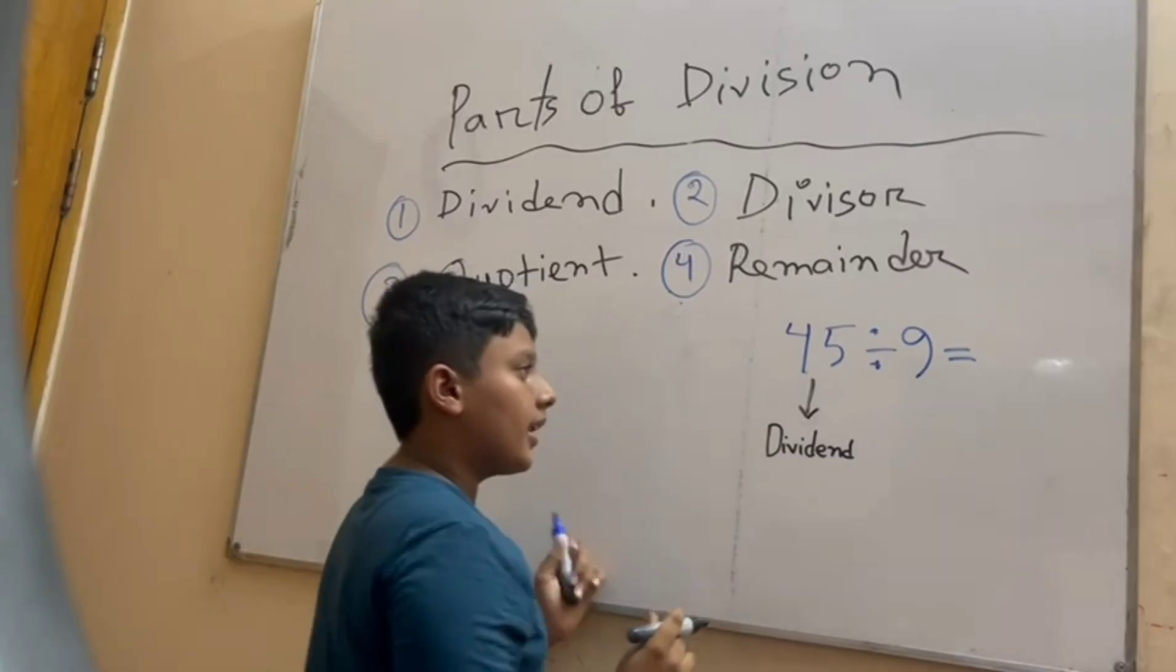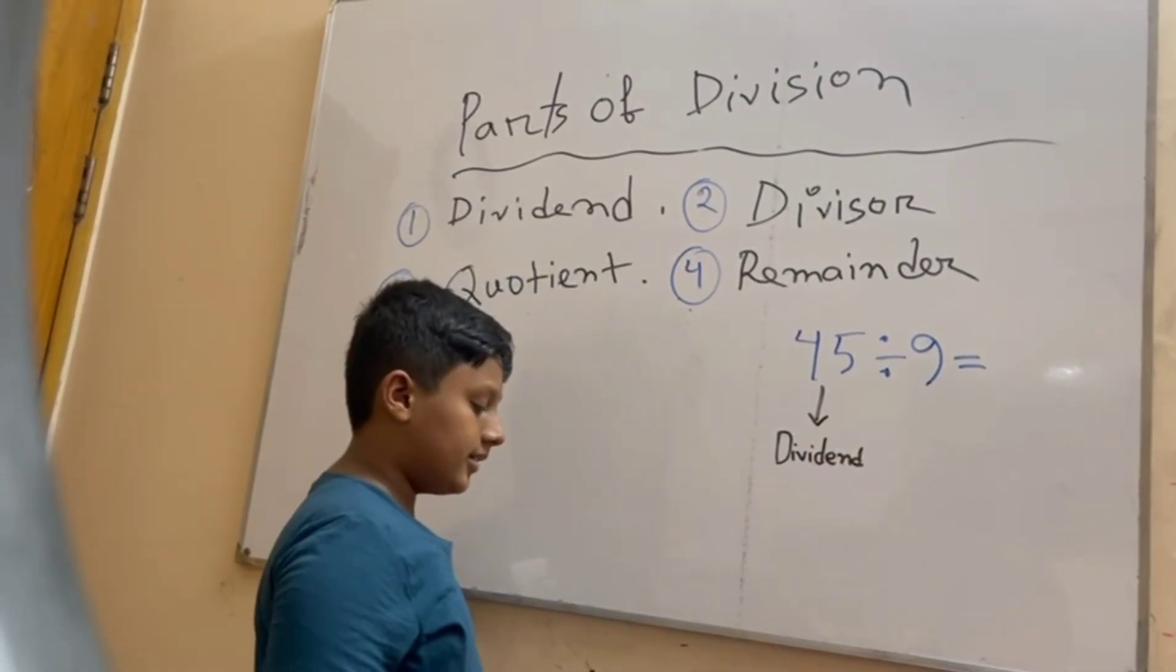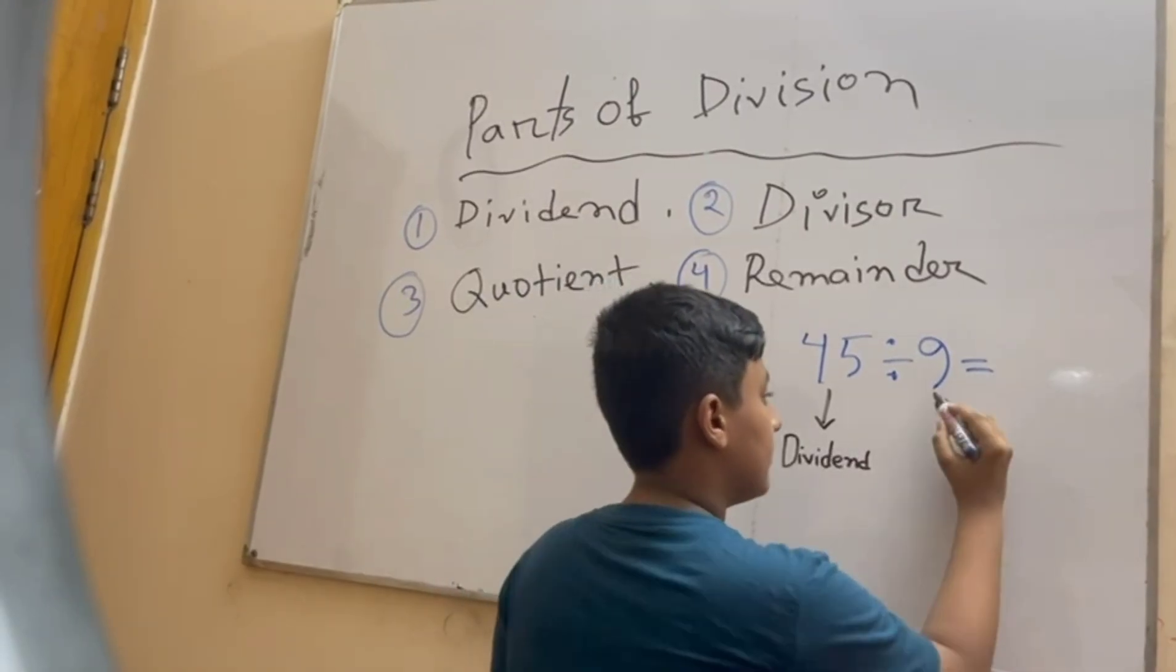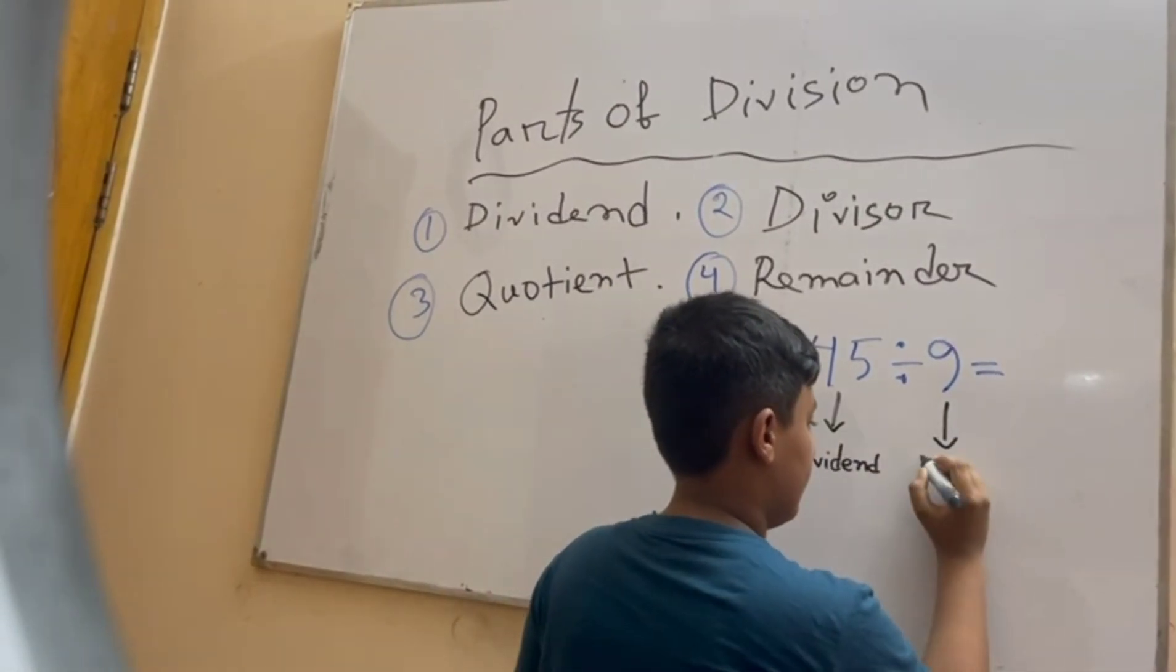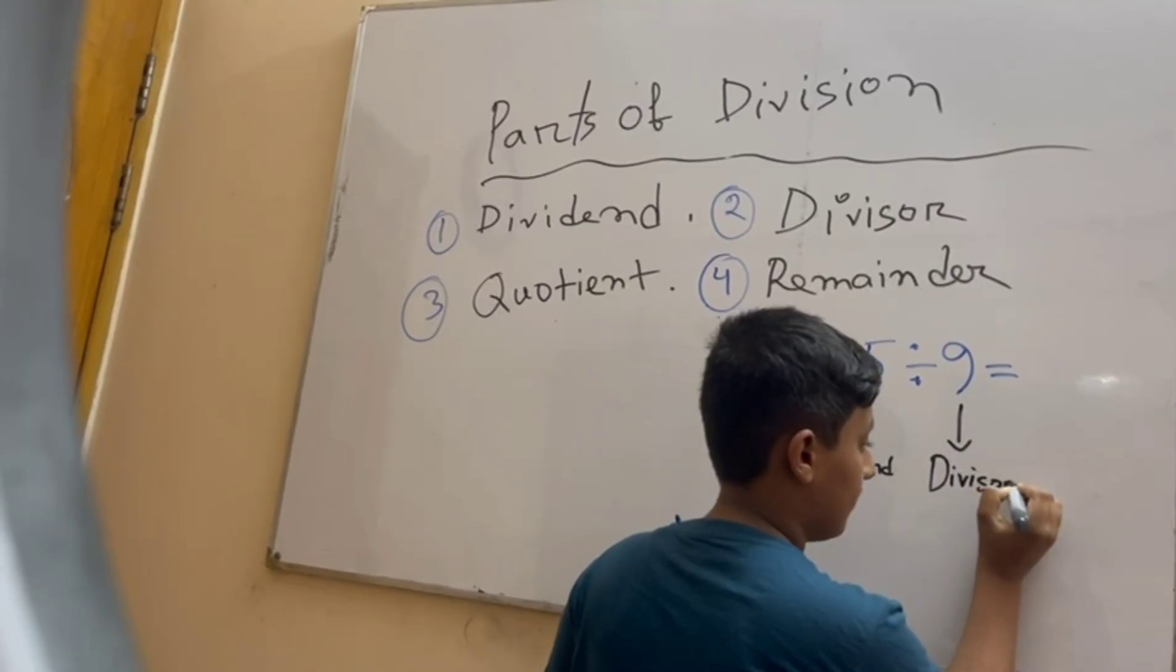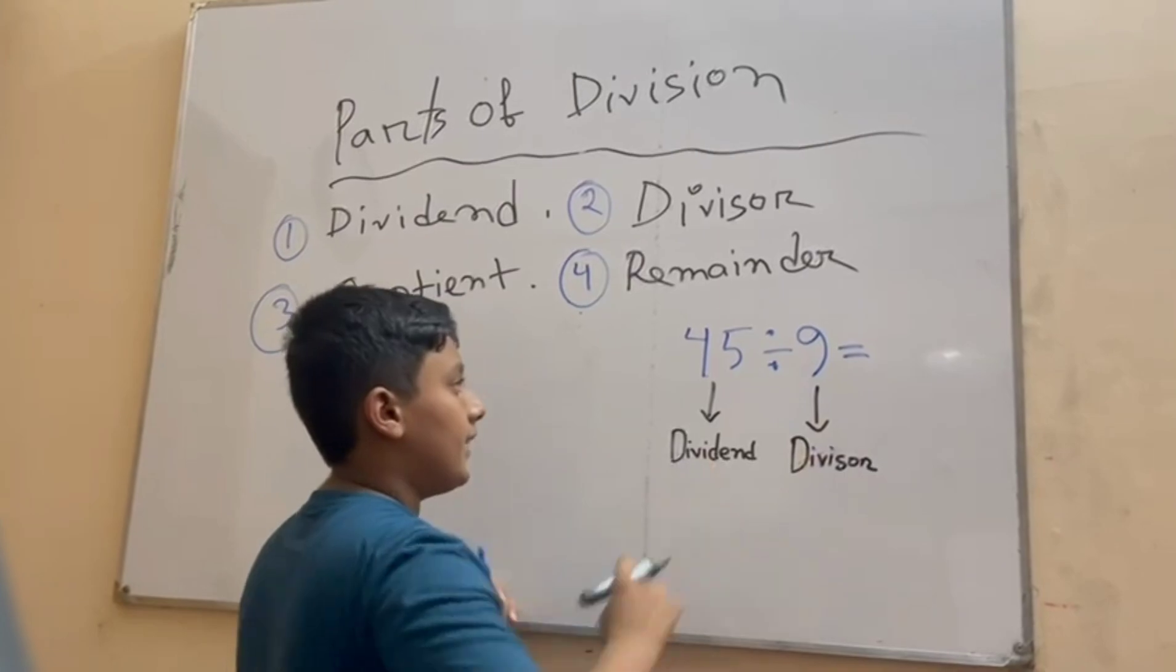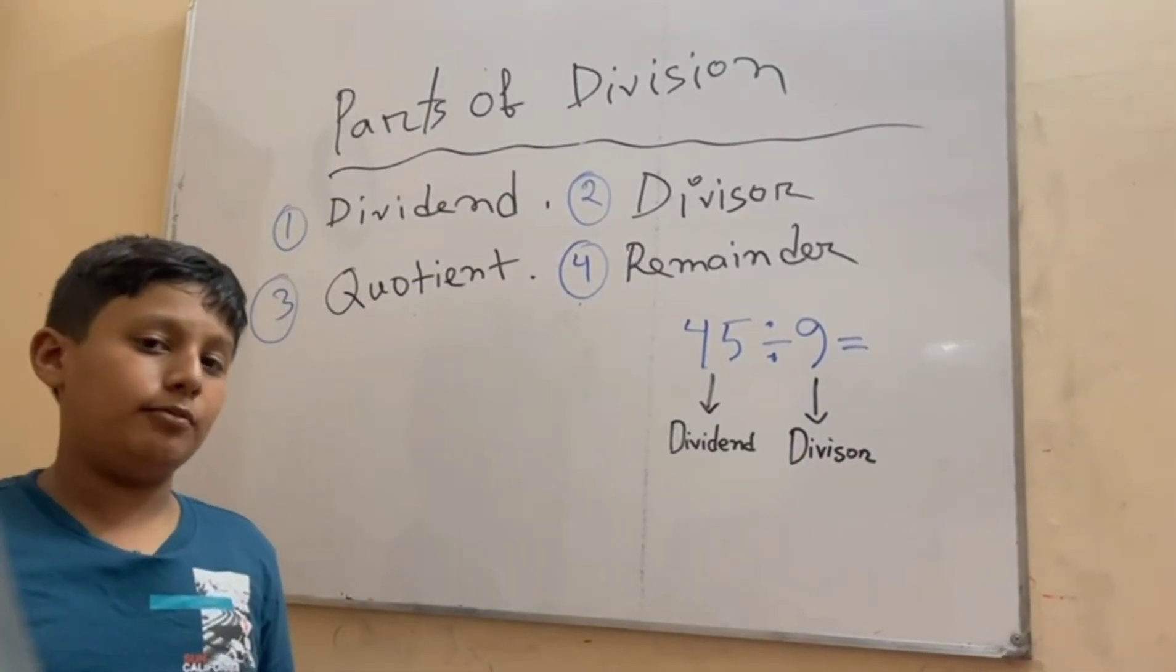And the number we are going to divide the dividend by is the divisor. In this case we are dividing 45 by 9.